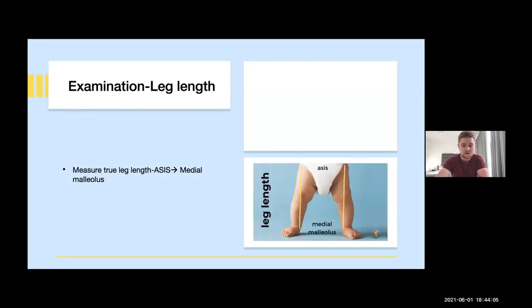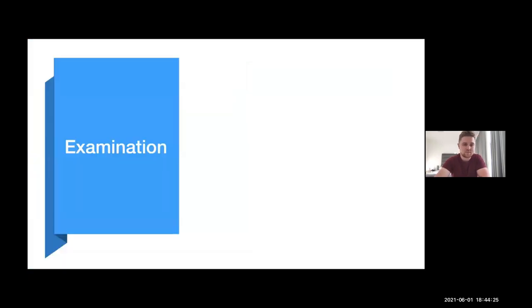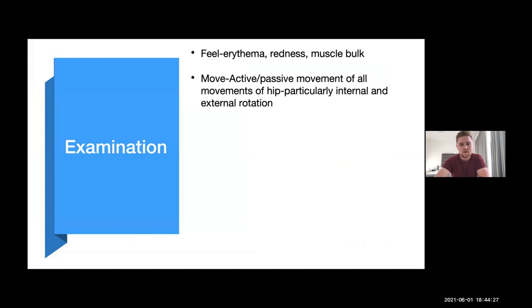Always assess leg length in children. True leg length is measured from the ASIS to the medial malleolus. A quicker assessment is the Galeazzi sign — flex the child's knees up and observe for an obvious difference between the two legs, suggesting a dysplastic hip. For active and passive movements, this can be more difficult in children and you may need to make it into a game. If they're in significant pain, they won't let you do very much.